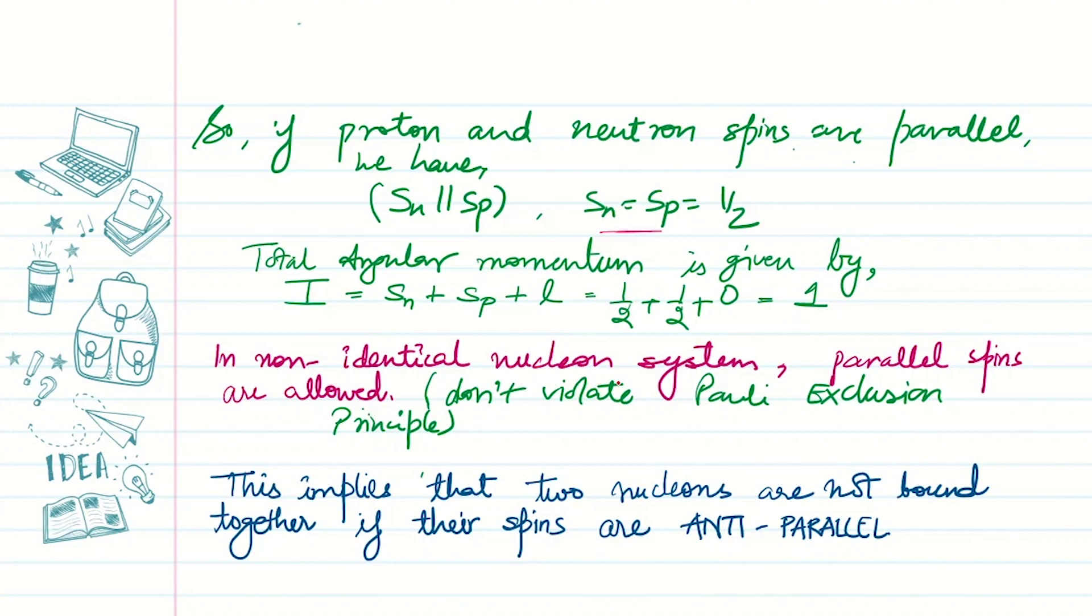In a non-identical nucleon system (the neutron-proton system), parallel spins are allowed because they don't violate the Pauli exclusion principle. The deuteron is a weakly bound state.